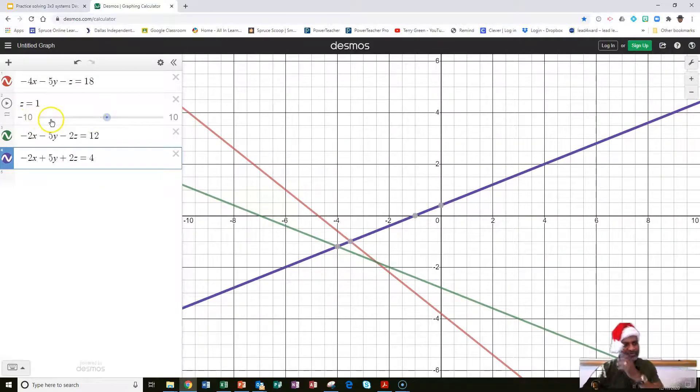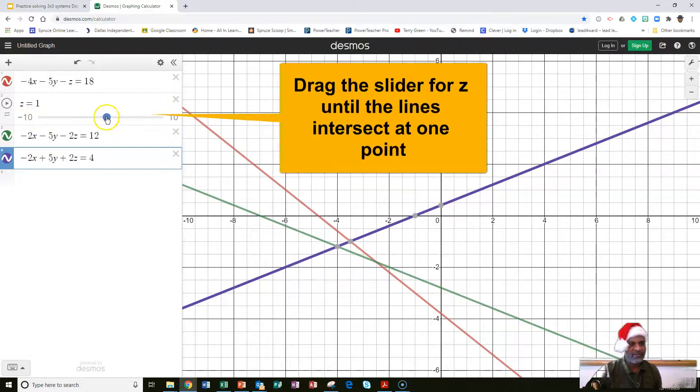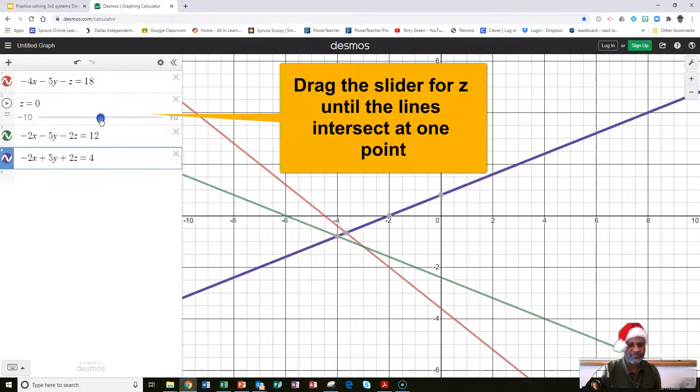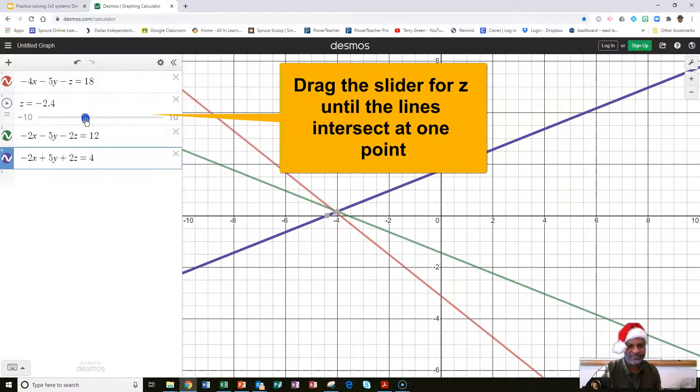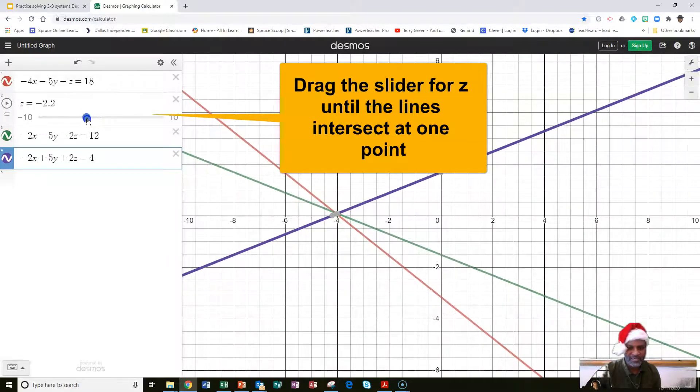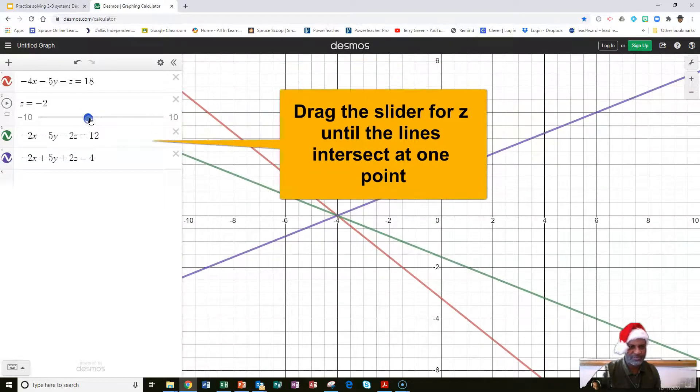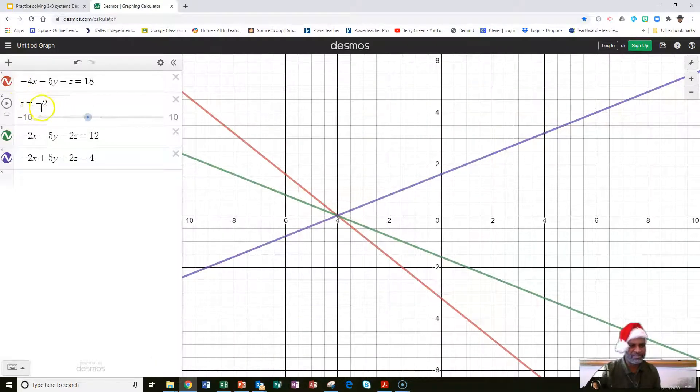Now, here's where a slider for z comes in. If I drag the value for z, it looks like I get all the lines to intersect at a single point there, right there where z is equal to negative 2.